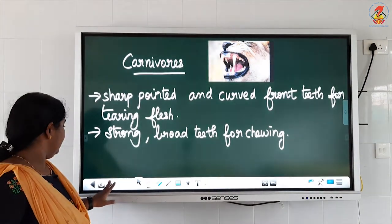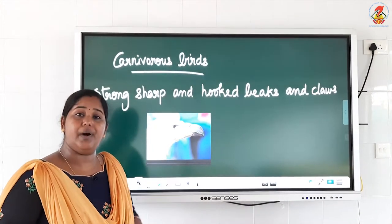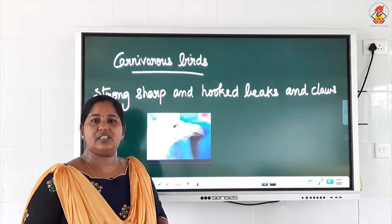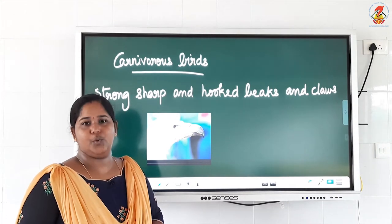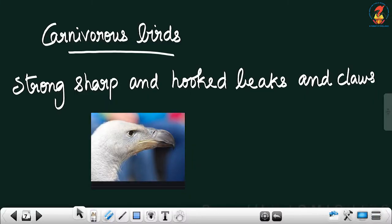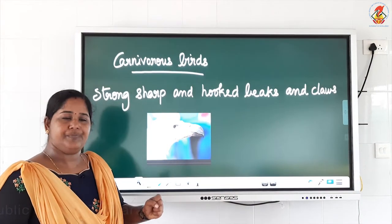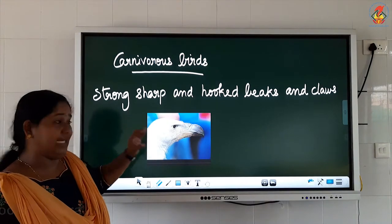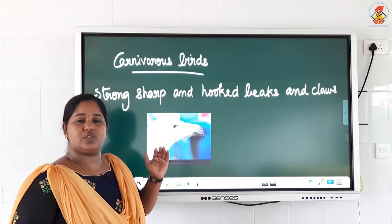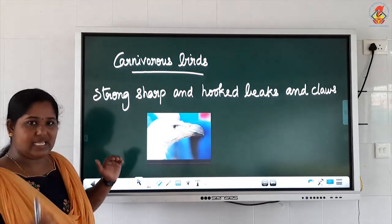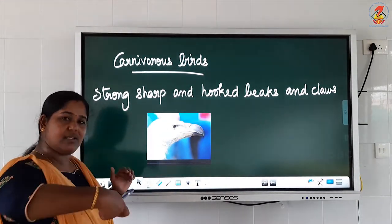Next is carnivorous birds. Carnivorous birds do not have teeth. Have you seen any bird with teeth in its mouth? No — they have a beak. I have shown the picture of a carnivorous bird. Carnivorous birds are birds which feed on the flesh of other animals. They have strong, sharp, and hooked beaks. We can see from the picture that it is a very strong beak — it appears to be strong.